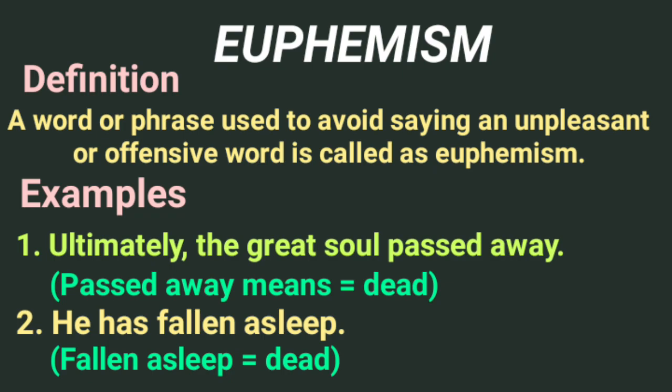The last figure of speech is Euphemism. A word or phrase used to avoid saying an unpleasant or offensive word is called Euphemism. For example: 'Ultimately the great soul passed away.' And the second example: 'He has fallen asleep.' 'Passed away' means dead, and 'fallen asleep' means he is dead — permanently slept, never to get up again. But instead of using harsh words like 'dead,' we use soft words such as 'passed away' or 'fallen asleep.' When such terminology is used to avoid harsh words, it is called Euphemism.